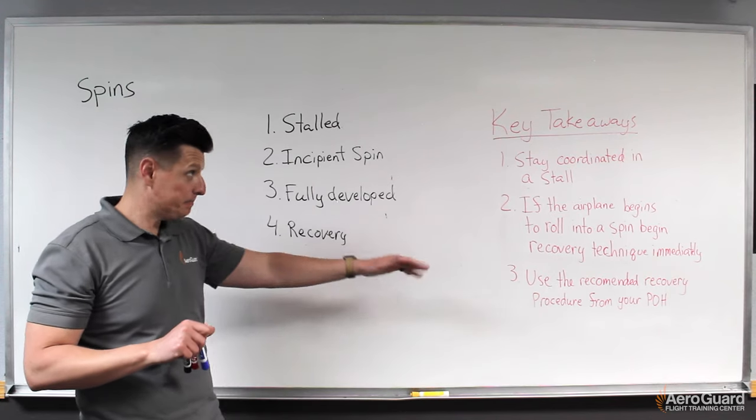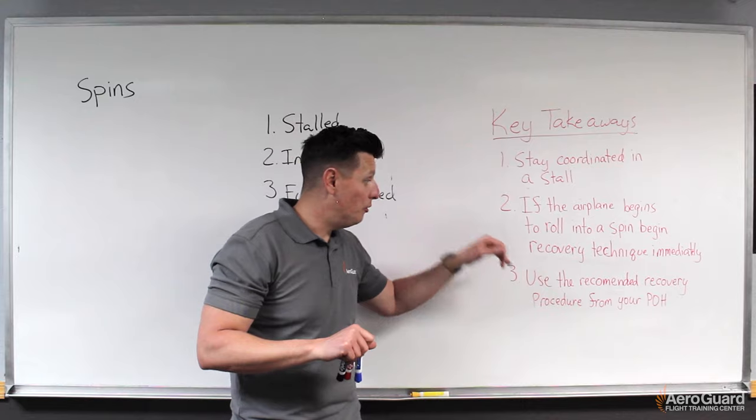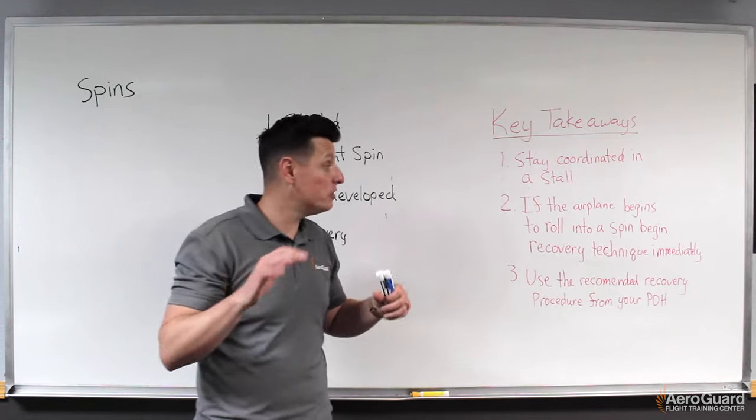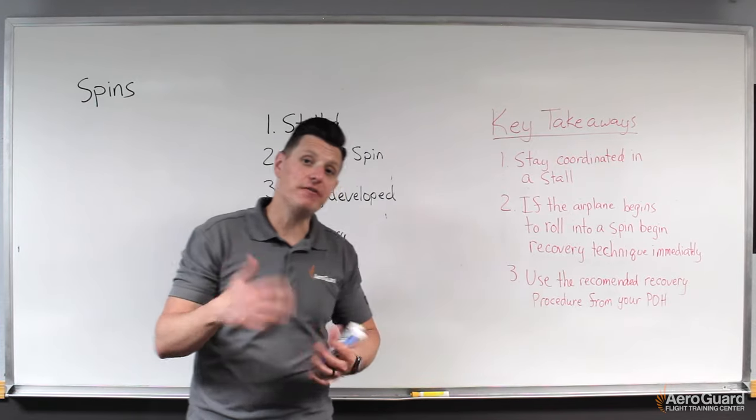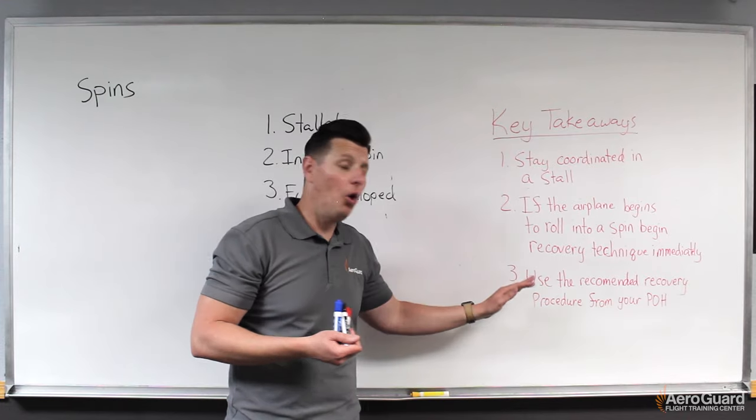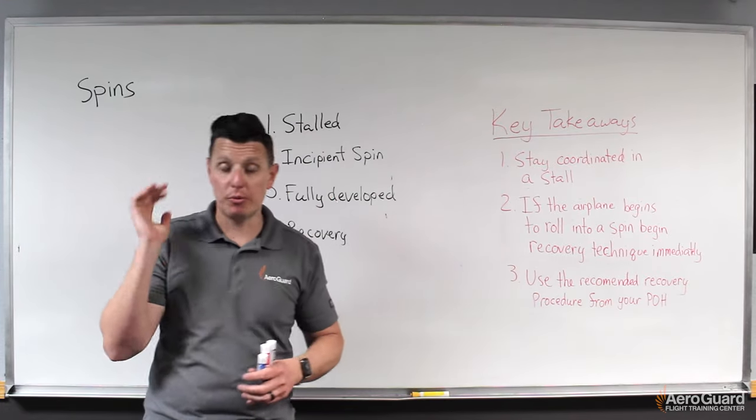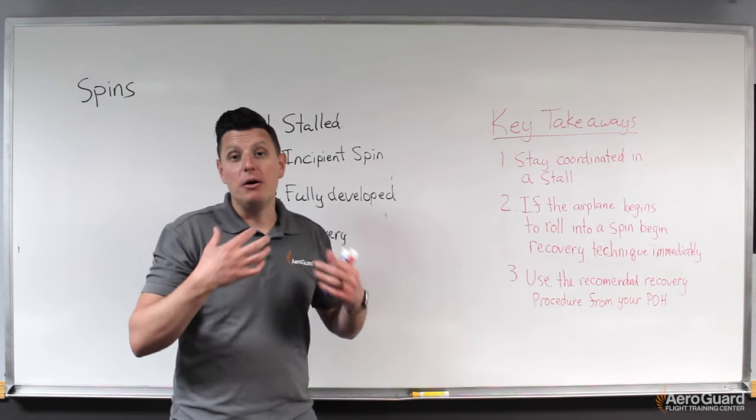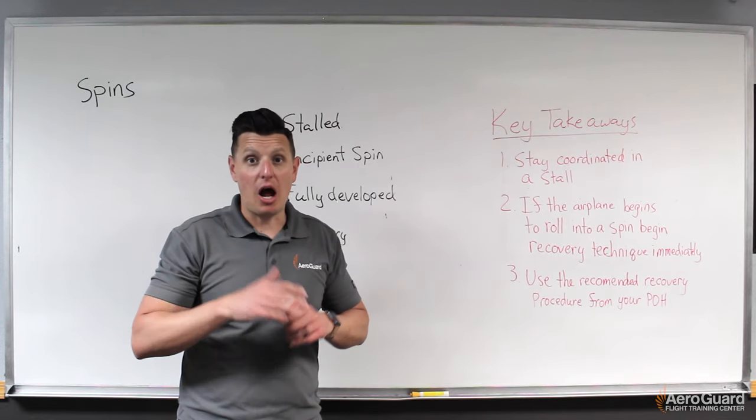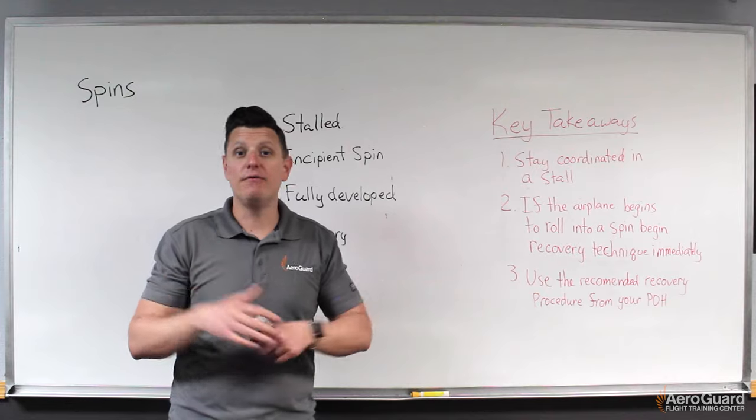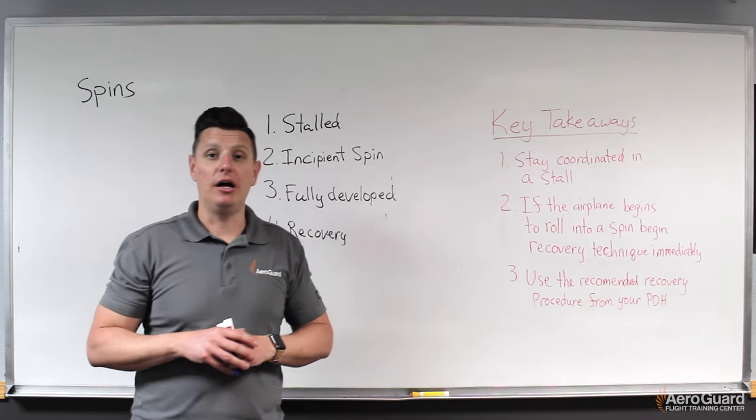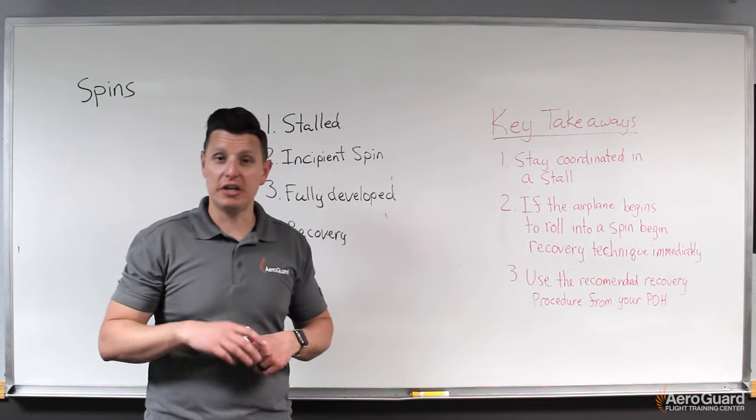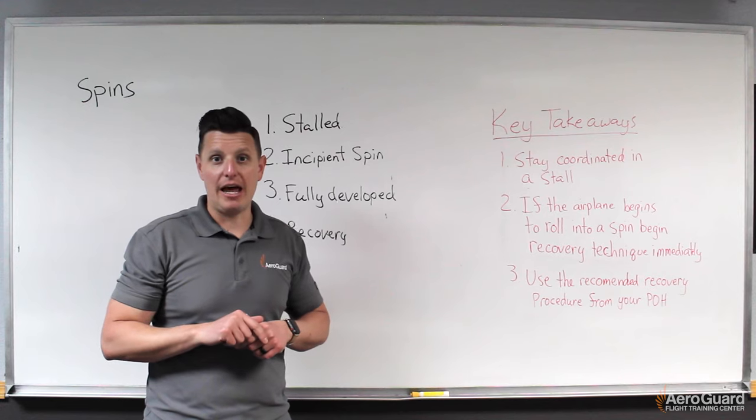And the last piece that I want you to take away from this is the recovery pieces that we talked about are generally four elements that are found in all recovery procedures. However, different manufacturers have different recommendations. So always check your POH, make sure that you know your particular recovery procedure in your exact make and model aircraft. Once again, my name is Eric at AeroGuard Flight Training Center. I hope this video has been very helpful and insightful and you learned a little bit more about spins. Don't forget to like or subscribe to the channel here. We'll continue to produce more and more of this content every week. Thank you very much and we'll see you later. Bye.